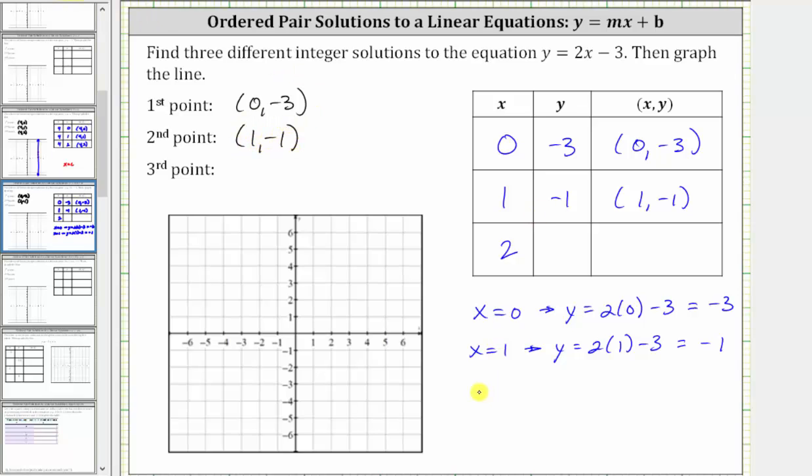Next, we have x equals 2. When x is equal to 2, y must equal 2 times 2 minus 3, which gives us 4 minus 3 or positive 1. The ordered pair (2, 1) is a solution. It's also a point on the graph.